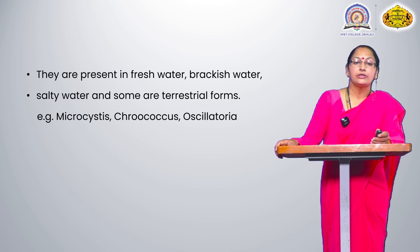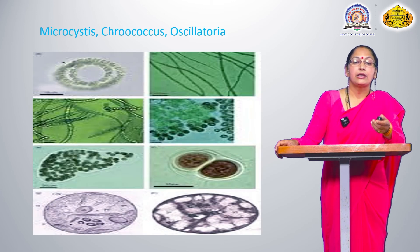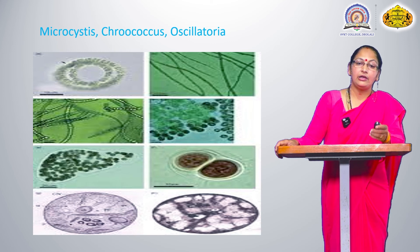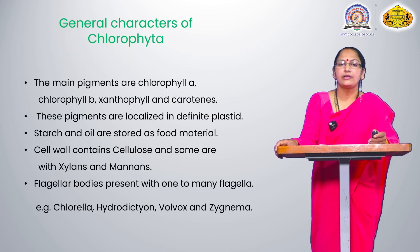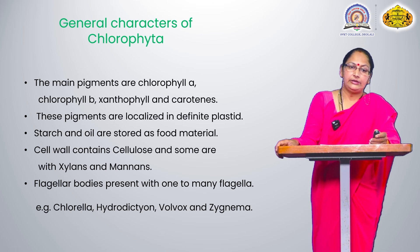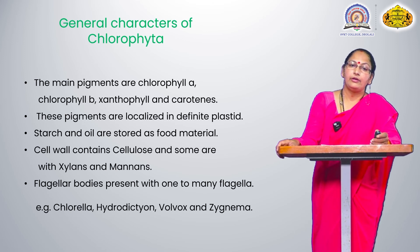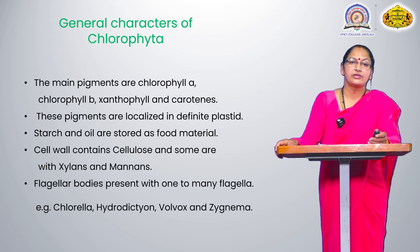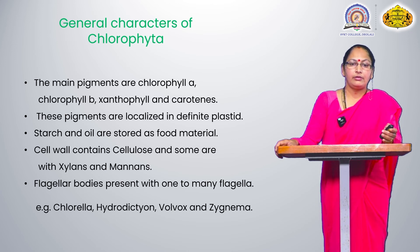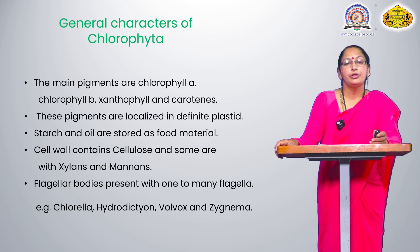Good examples of Cyanophyta are Microcystis, Gloeocapsa, and Oscillatoria. These are forms and examples of blue-green algae shown in pictures. The next class of algae is Chlorophyta.